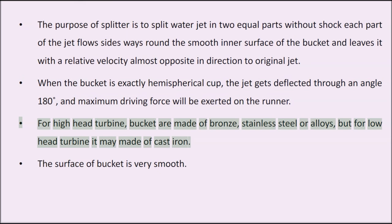For high head turbines, buckets are made of bronze, stainless steel, or alloys, but for low head turbines they may be made of cast iron. The surface of the bucket is very smooth.